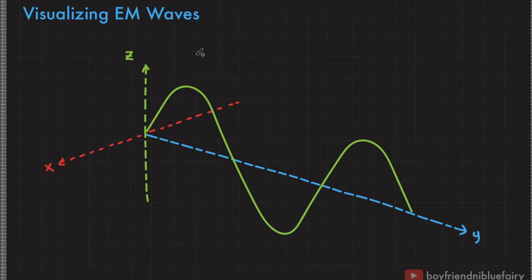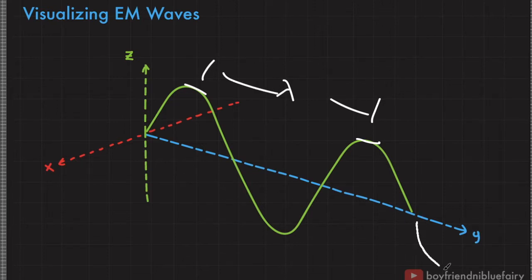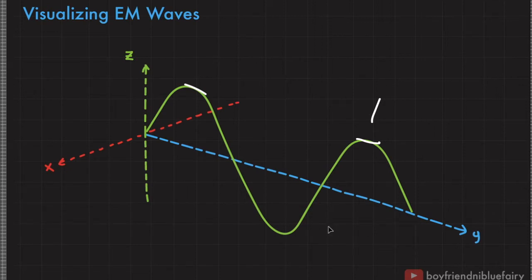The distance of one wave cycle — for example, from the origin to one complete wave cycle — is called wavelength. It can also be measured as the distance from crest to crest, so this is one wavelength. Or it can also be the distance from trough to trough — this is also one wavelength. You can measure wavelength in different ways as long as it represents the distance of one complete wave cycle.